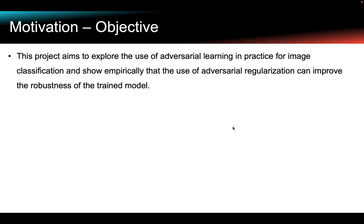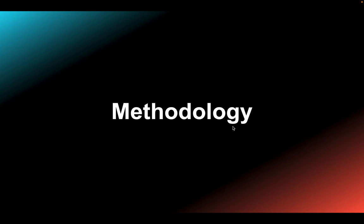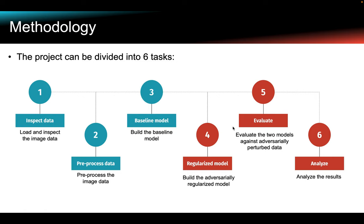Attackers can cause the network to make perplexing mistakes simply by feeding malicious perturbed inputs to the model. To overcome such adversarial vulnerability and generally improve models against perturbed data, this project will demonstrate an adversarial regularization technique called Neural Structure Learning for Image Classification. The experiment will mainly consist of six tasks: inspect image data, pre-process data, build baseline model, build adversarial regularization model, evaluate the two models against adversarially perturbed data, and lastly analyze the results.